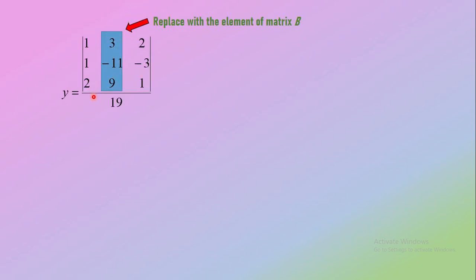Next, find the value of y. Write the determinant obtained by replacing the elements of matrix B in the second column, and divide by determinant A, which is 19.